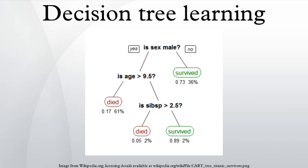In data mining, a decision tree describes data but not decisions. Rather, the resulting classification tree can be an input for decision making. This page deals with decision trees in data mining. Decision tree learning is a method commonly used in data mining. The goal is to create a model that predicts the value of a target variable based on several input variables.